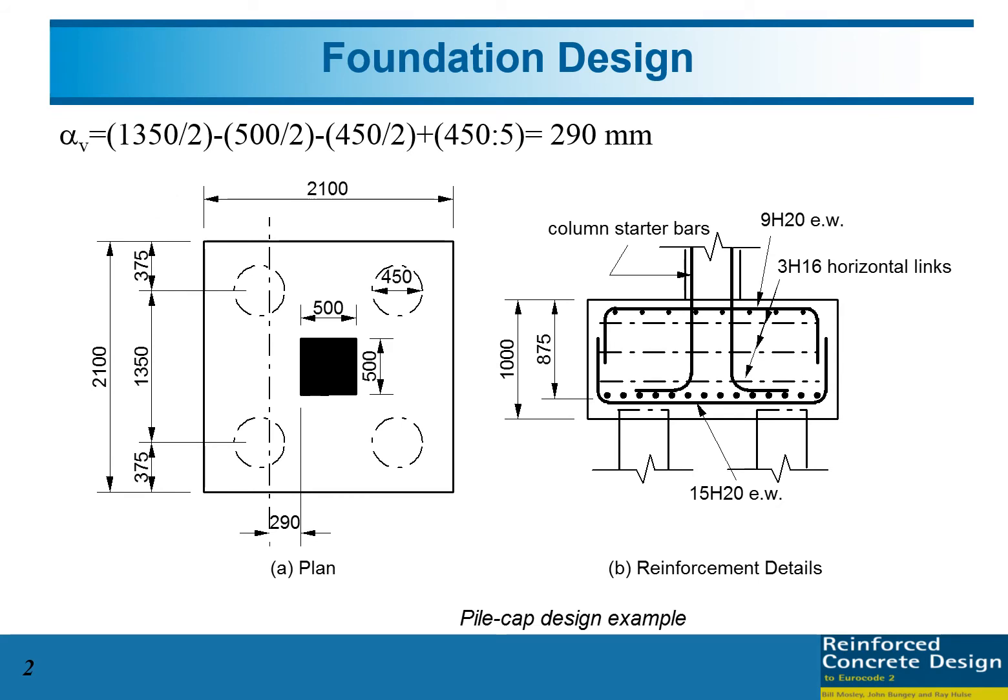The center-to-center distance of piles is 1350mm, and the distance from the center of the pile to the edge of the pile cap is 375mm. The column dimension is 500mm. From this we can get alpha V by using this equation. Alpha V equals 290mm. On the right side you can see this figure to make the reinforcement bar detail later after we do the design.